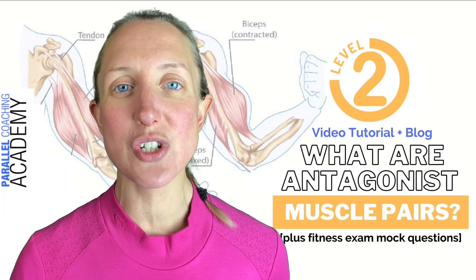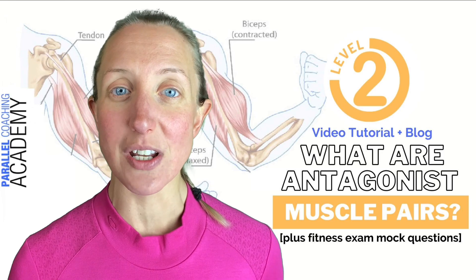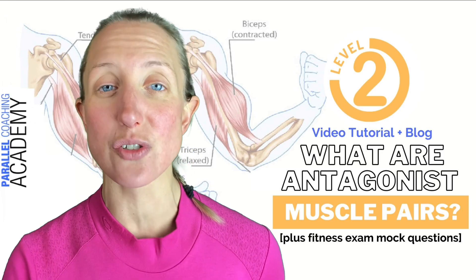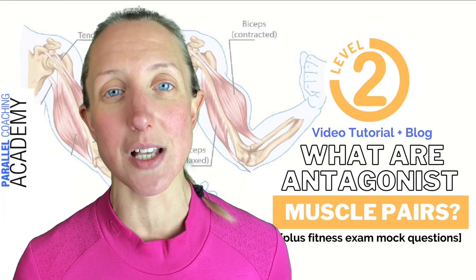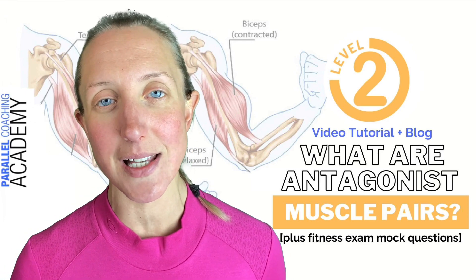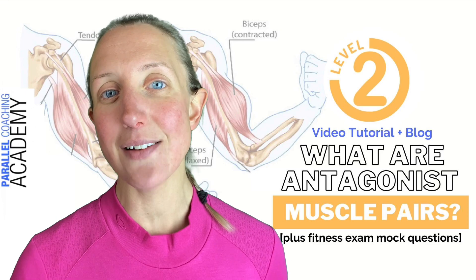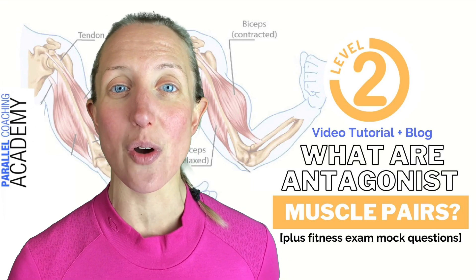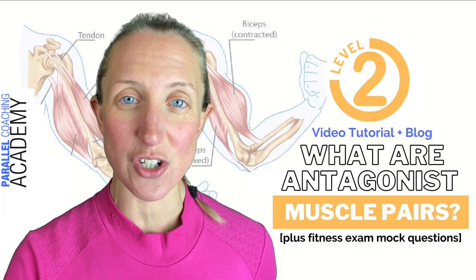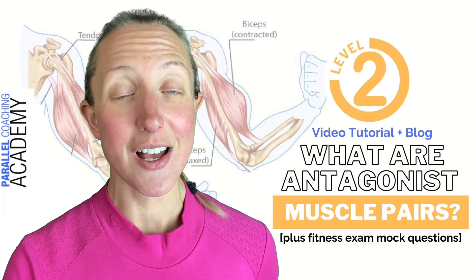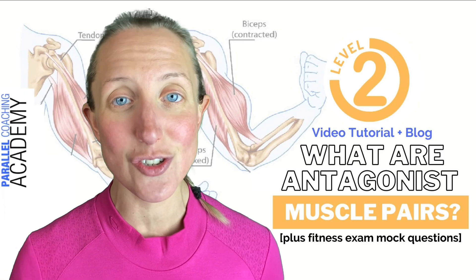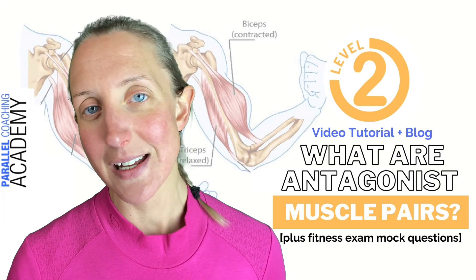This will also help if you're doing your level 2 gym instructor course, where you need to know about the types of muscles worked in certain exercises, and in level 3 personal trainer where you need to know about specific training systems like the agonist antagonist superset.